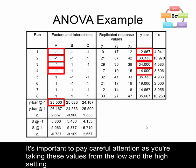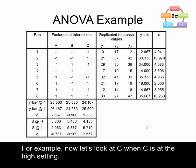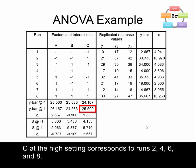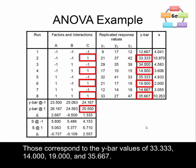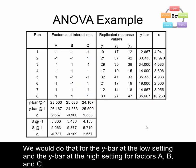It's important to pay careful attention as you're taking values from the low and high settings and following those across to the appropriate y-bar or s column. For example, C at the high setting corresponds to runs 2, 4, 6, and 8, with y-bar values of 33.333, 14, 19, and 35.667. When those four values are averaged together you get a value of 25.5. We do that for the y-bar at the low and high setting for factors A, B, and C.